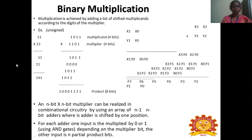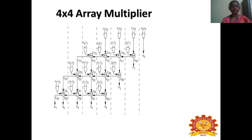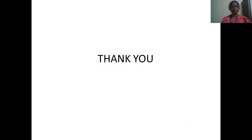Binary multiplication example: 11 into 13 should give 143. In binary, 1011 is multiplied with 1101. The partial products are generated, multiplied and then shifted, and then added together. For multiplication we use AND gates, and for addition we use half adders and full adders. For 2-bit addition we use half adders; for 3-bit addition we use full adders. This is a 4×4 array multiplier.